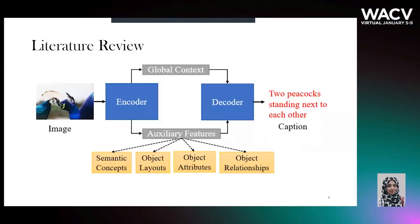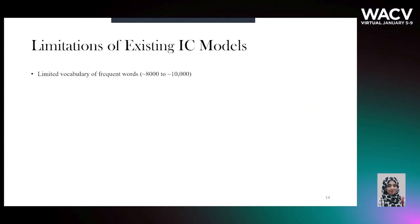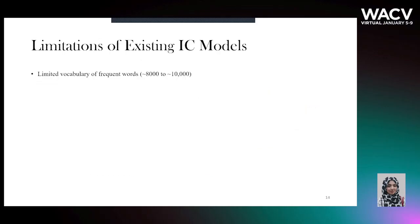Over the past decades, numerous frameworks have been proposed for captioning, amongst which encoder-decoder-based neural models have been very popular. In this particular framework, the encoder transforms the visual input into visual embeddings, whereas the decoder uses this information to generate text. While such frameworks differ in the way of encoding visual information, our focus is more towards improving the decoder so that the model can better express the visual information.